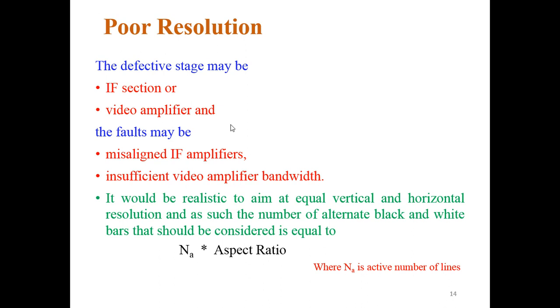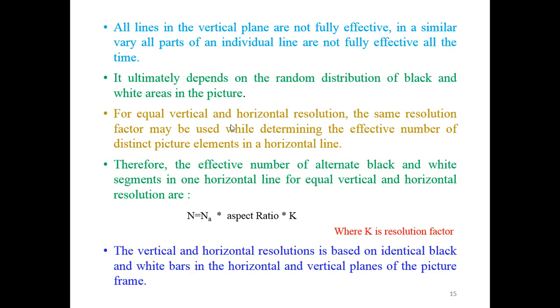It would be realistic to aim at equal vertical and horizontal resolution. As the number of alternate black and white bars should be considered is equal to NA times aspect ratio, where NA is the active number of lines. All the lines of the vertical plane are not fully effective in a similar way. The part of individual line are not fully effective all the time. It ultimately depends on the random distribution of black and white areas in the picture.